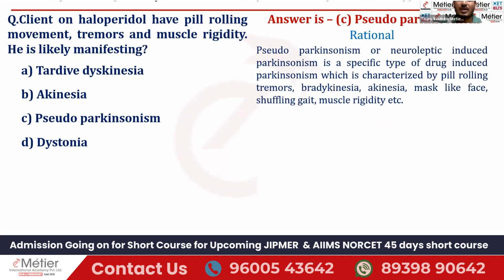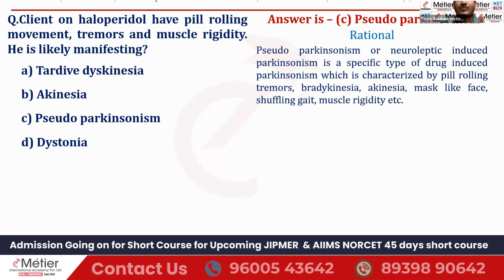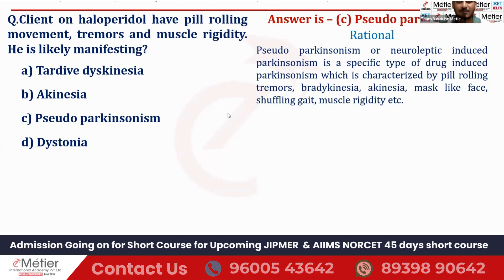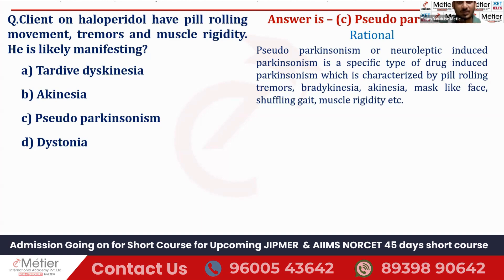Haloperidol-type antipsychotic drugs are dopamine antagonists — antagonist means the secretion of dopamine will be blocked by this type of drug. When dopamine secretion is blocked, this kind of manifestation gets developed. If the patient develops these manifestations because of this type of drug, it is called pseudo-Parkinsonism.